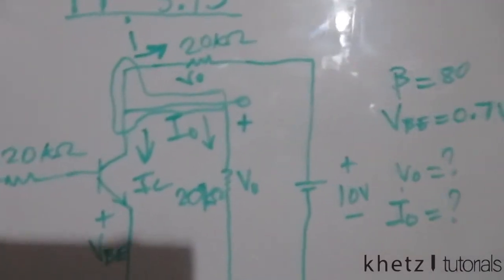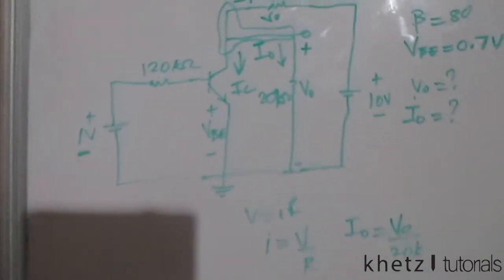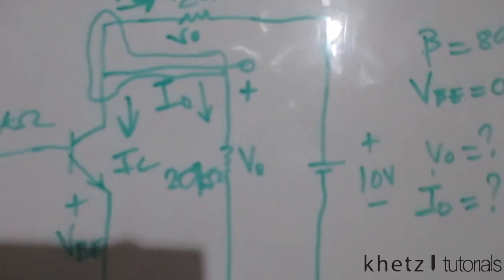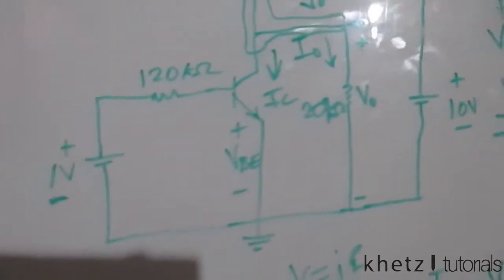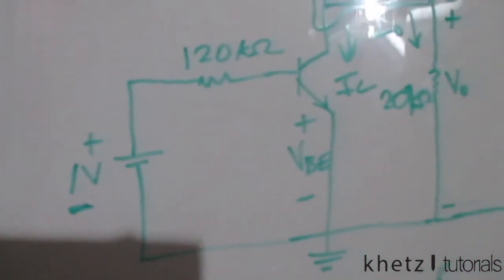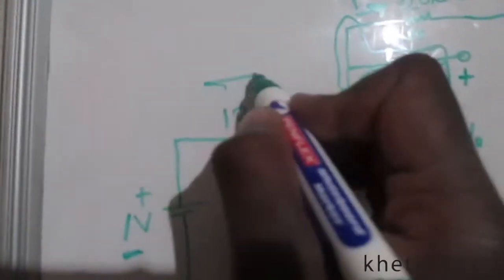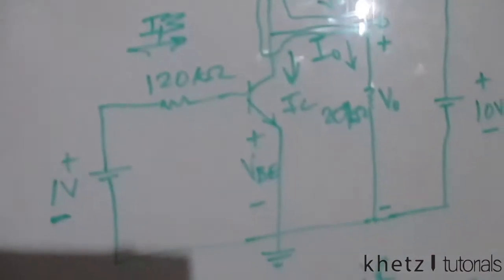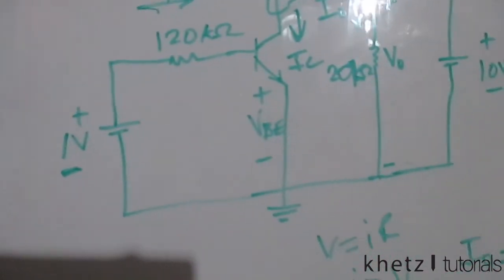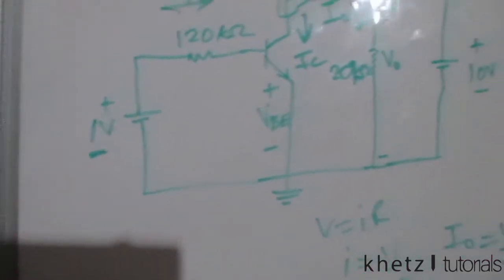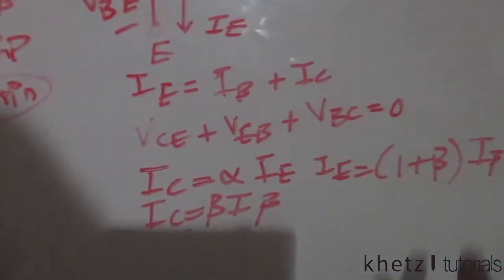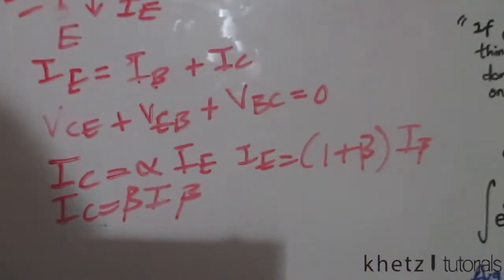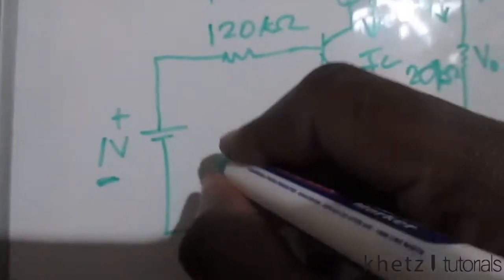We can't start on that side yet because we don't know Ic, Io, Vo, or i. So let's start on this side and find Iβ (Ib), which is indicated on the schematic. I advise always starting by finding Iβ and then seeing how to manipulate the equations to find what you're looking for.